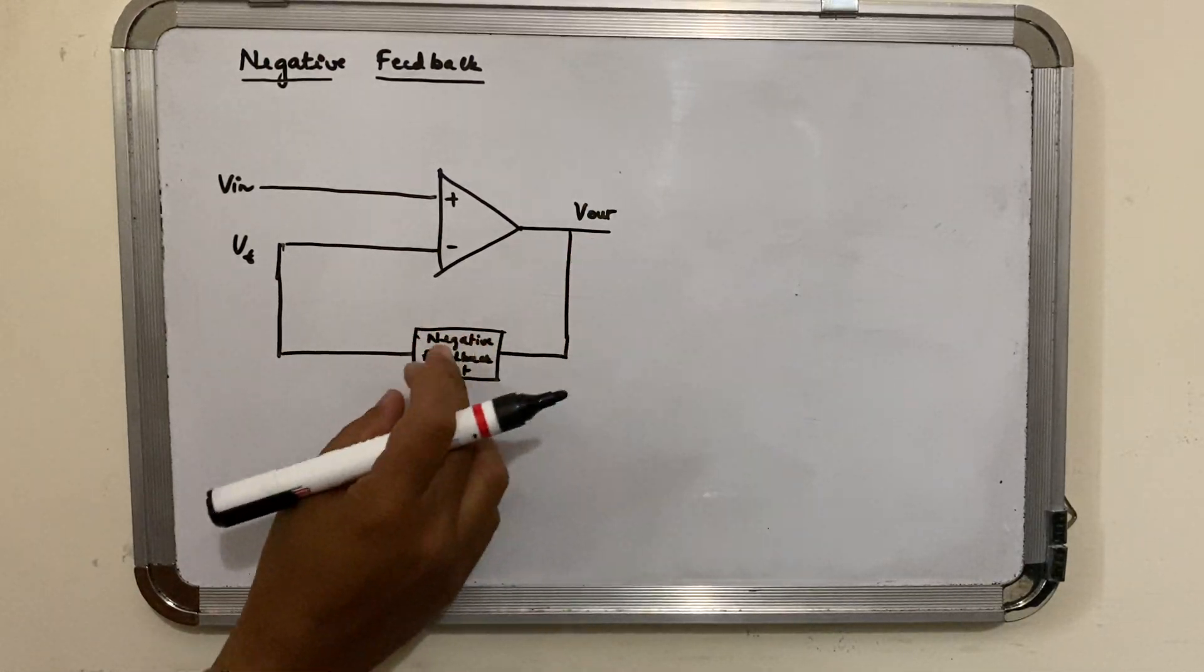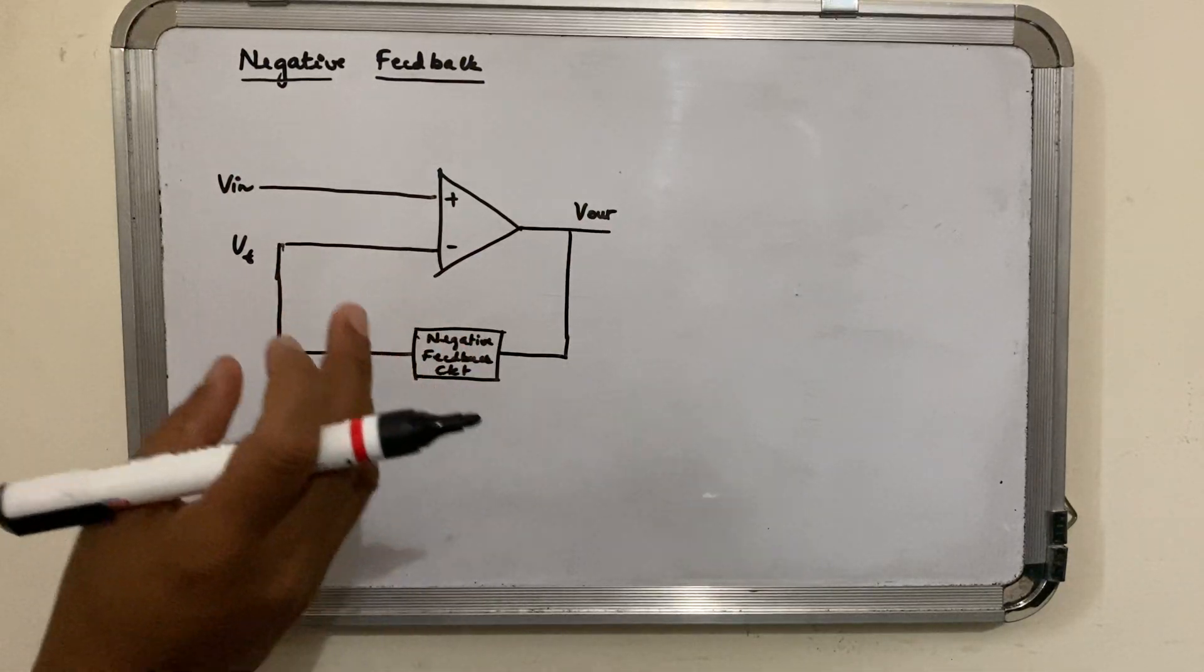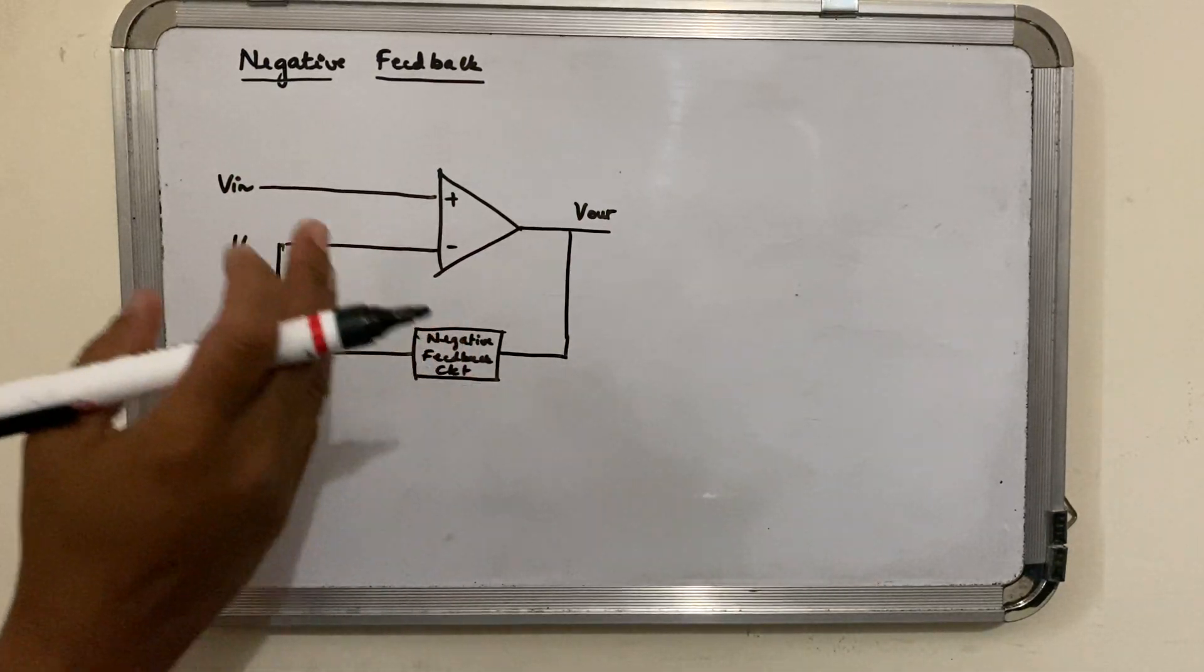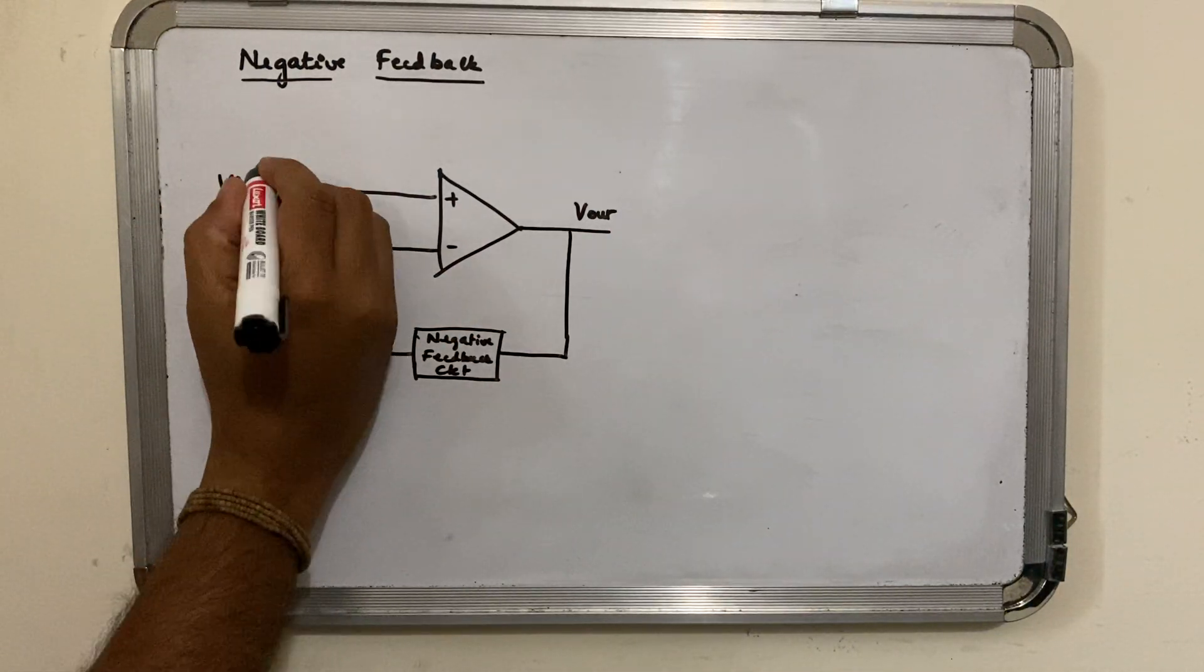Why is it used? The part of the output is given to the negative feedback circuit wherein you can have a check with respect to the gain, input impedance, output impedance, or the bandwidth of the op-amp.